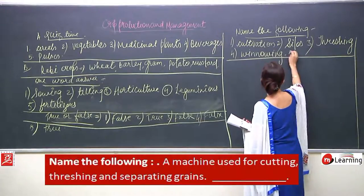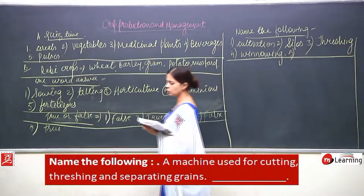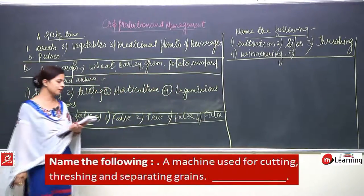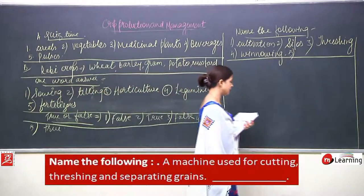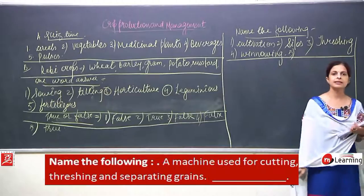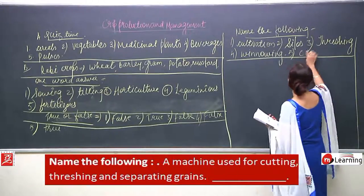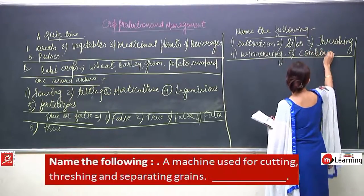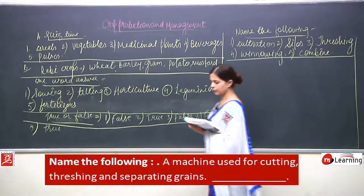Number 4: a machine used for cutting, threshing, and separating grains — what is it known as? It is known as a combine.